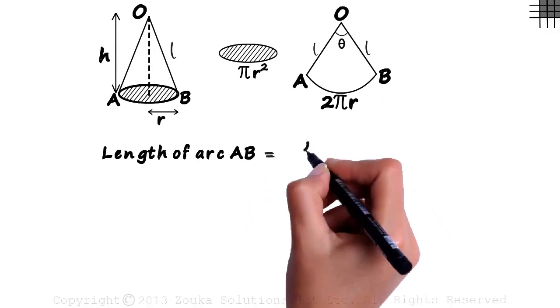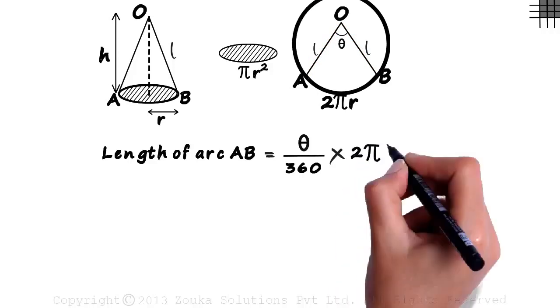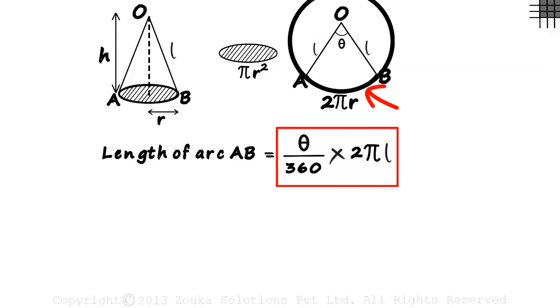It will equal theta by 360 multiplied by the circumference of the circle with radius O, A and O, B. What will be the circumference of the circle that is formed with this as the sector? It will be 2 pi L since L is the radius of the circle of which this sector is a part. This tells us that the length of arc AB is a part of the circumference of the big circle that can be formed here.